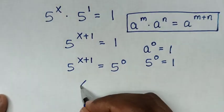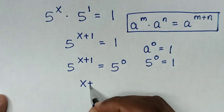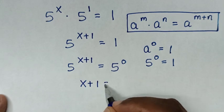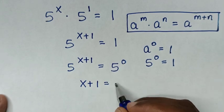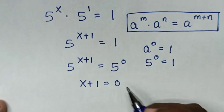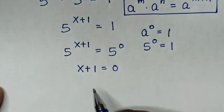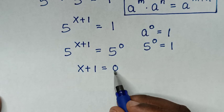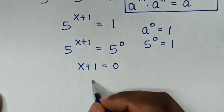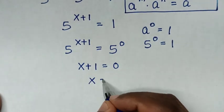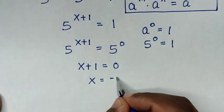Then it will be x plus 1 is equal to 0. We take 1 to the right side, so x is equal to negative 1.